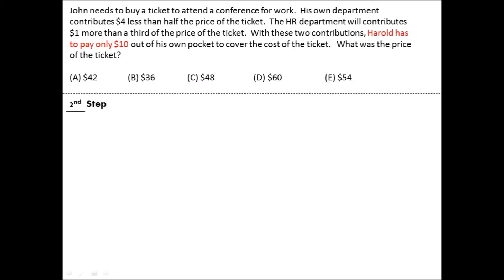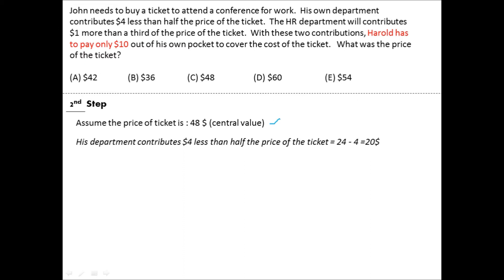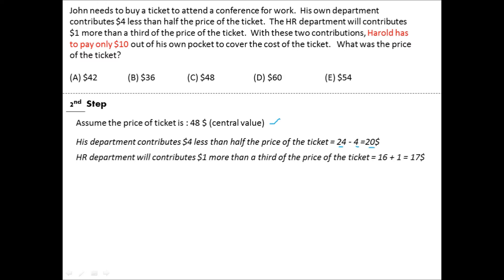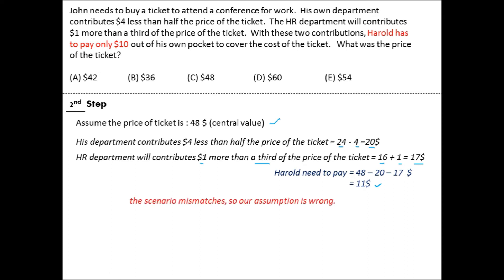Let's test ticket price = 48. His department contributes half of 48 minus 4: that's 24 − 4 = 20. HR contributes one third of 48 plus 1: that's 16 + 1 = 17. Total contribution = 37. John pays 48 − 37 = 11, but the question says he pays 10. Since 11 > 10, the ticket price must be less than 48 — so options 54 and 60 are eliminated.